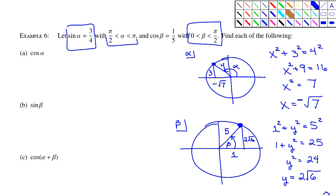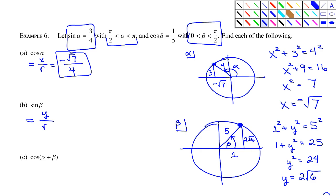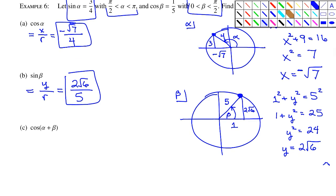From the circles: cosine α = −√7/4 (x over r from the alpha circle), and sine β = 2√6/5 (y over r from the beta circle).